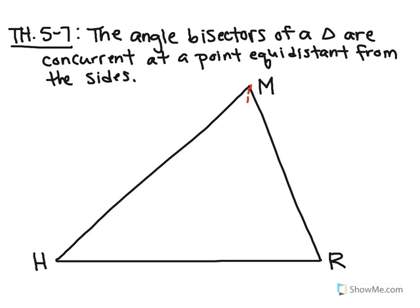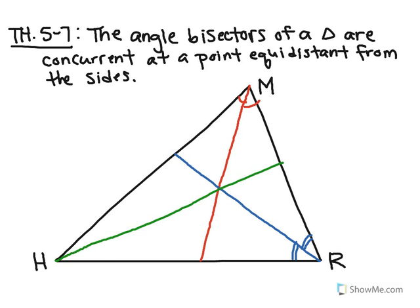I'm going to work with angle M first, and try to bisect — cut straight in half — this angle. These drawing tools aren't very accurate, but there we go: this looks like it's bisecting angle M, so this angle is congruent to this angle. Now let's work with angle R and try to cut this in half. There we go for R — this angle is congruent to this angle. And the next one: this angle here is congruent to this angle. So we've got our angle bisectors, and we have a point of concurrency right here in black.